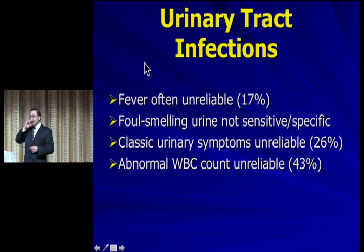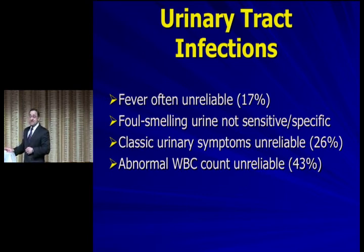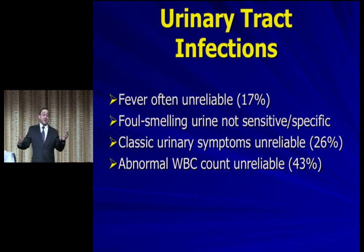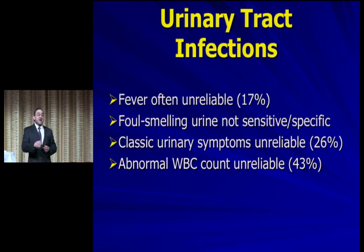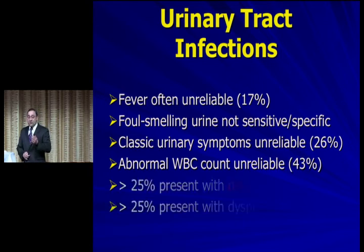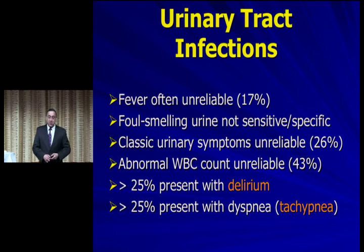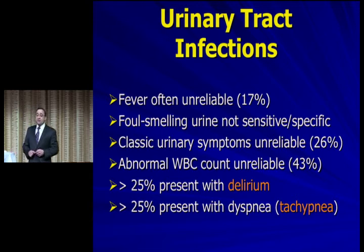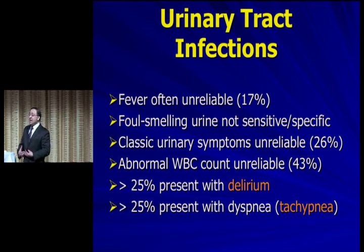Fever is often unreliable in patients with UTI — only about 17% will present with it. The foul-smelling urine criterion is neither sensitive nor specific. You can't rely on dysuria, frequency, or other classic urinary symptoms. Abnormal white count is also unreliable. More than 25% of elder patients with UTIs will present with delirium, and more than 25% will present with tachypnea — just from a bladder infection. So please check that respiratory rate.